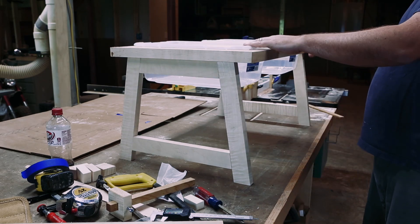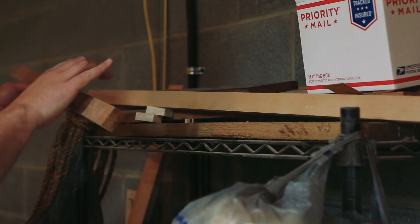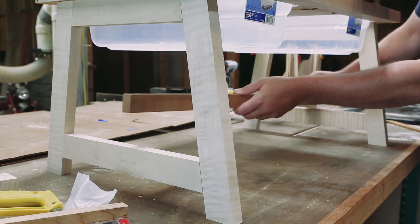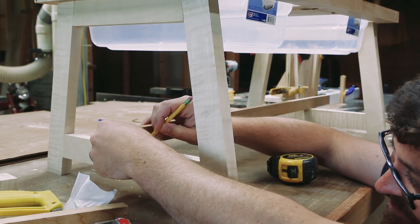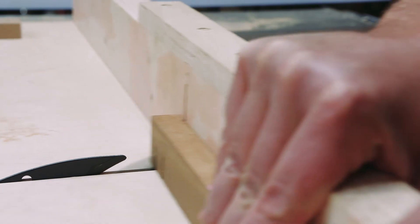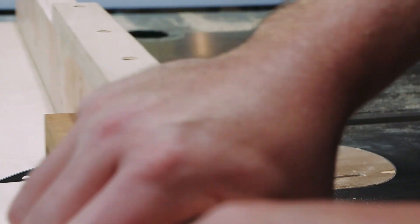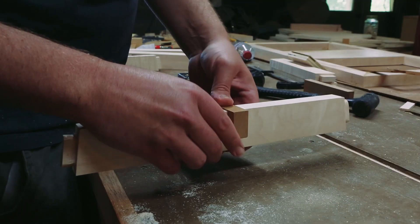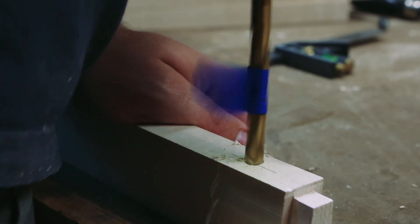I grabbed a piece of cherry. I cut half lap joints on the trestle and bottom stretchers. I cut those with my sled at the table saw.